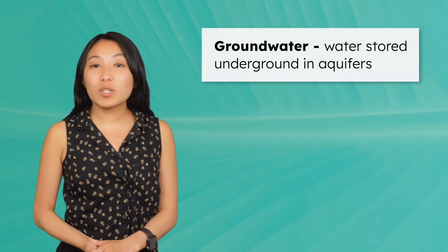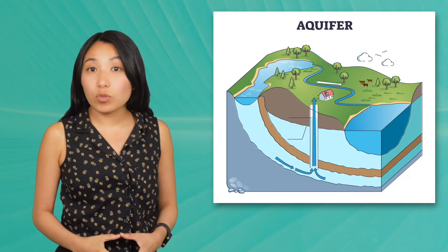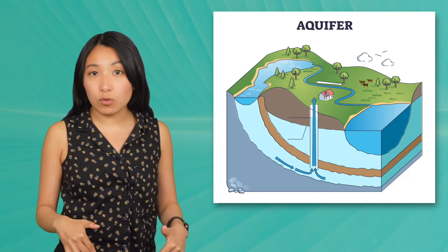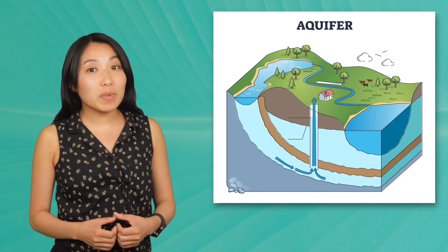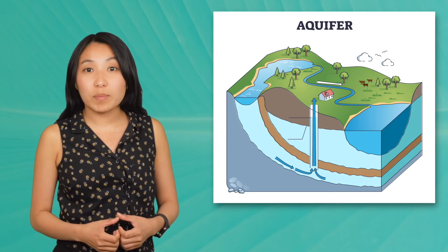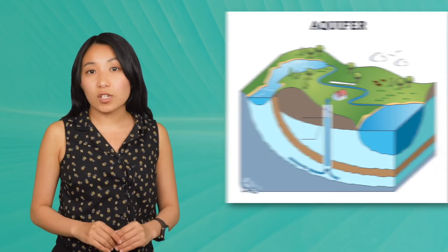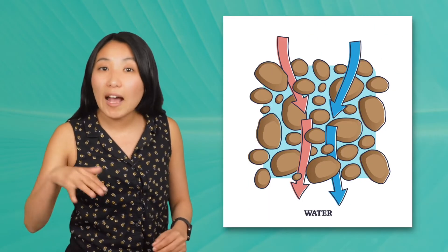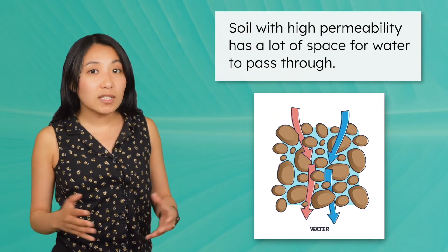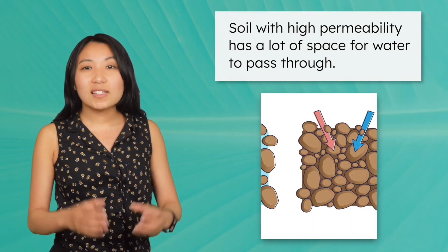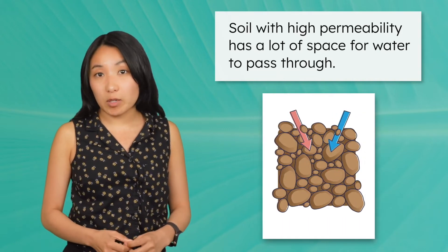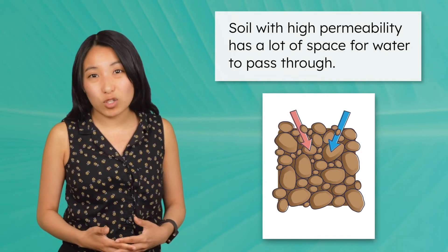Groundwater is simply water stored underground in aquifers. An aquifer is a layer of rock or sediment that water can pass through, creating a pool of underground freshwater. Soil permeability determines how much water from the surface moves underground. To permeate means to pass through, so soil with high permeability has a lot of space for water to pass through. Dense, compacted soils are less permeable. There's less space for water to move underground.